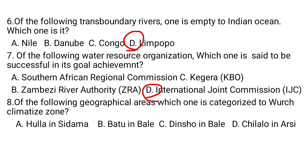Question number eight: of the following geographical areas, which one is categorized as a Wurch climate zone? A: Hula in Sidama, B: Batu in Bale, C: Dinsho in Bale, D: Chilalo in Arsi. Dinsho, Chilalo, and Hula are not Wurch — they are Dega zones. Batu in Bale is categorized as a Wurch area. So B is the answer.